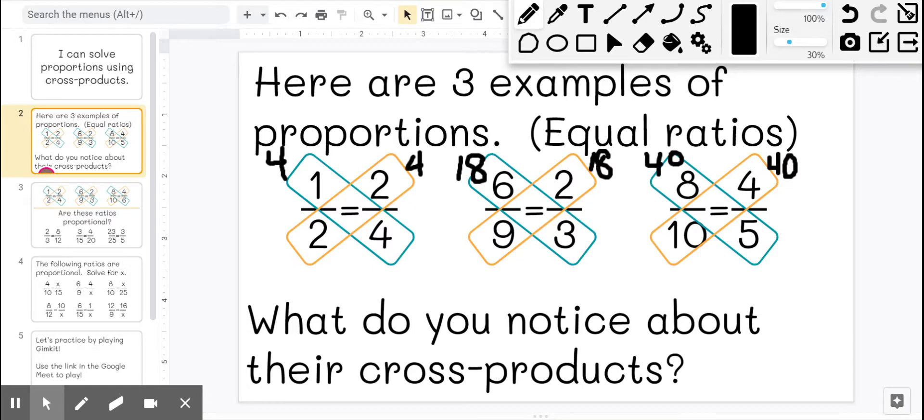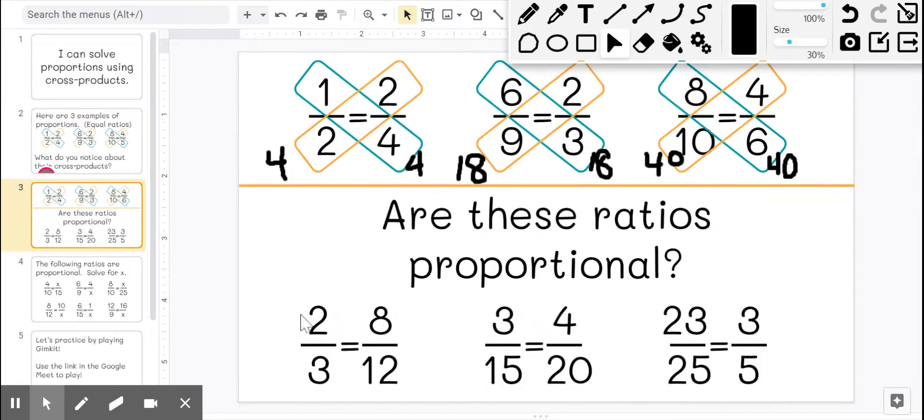Product means the answer when you multiply and if you multiply going across diagonally, you'll get the same number. So we're going to use our knowledge of that to figure out if these three ratios are proportional.